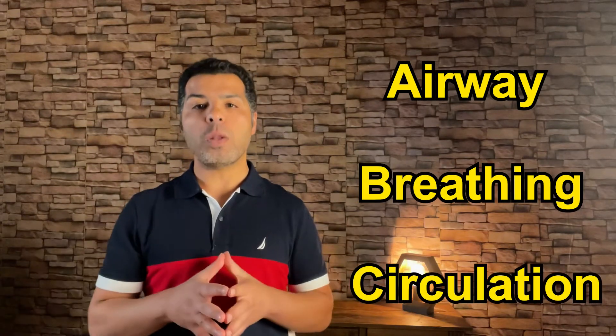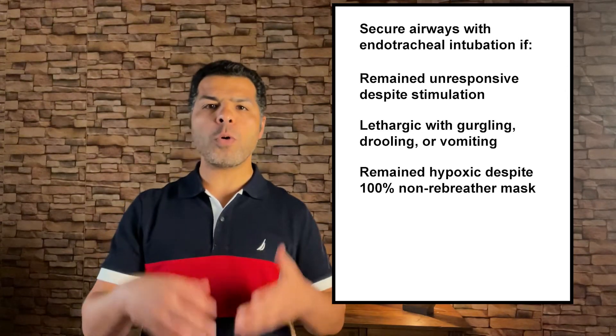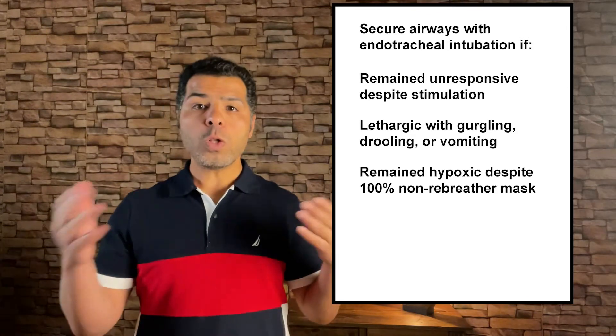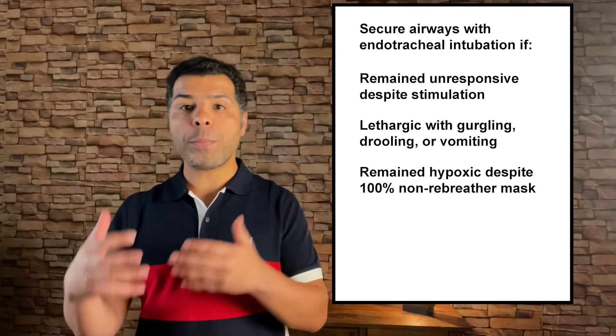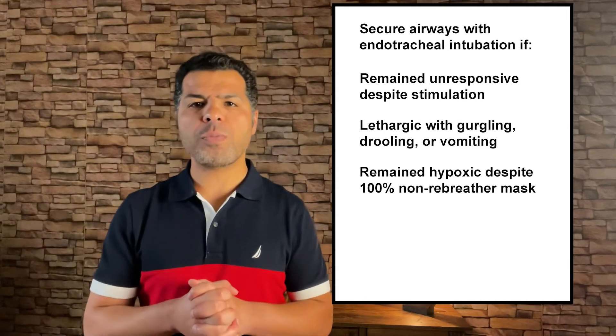At this point, the goal is to stabilize the patient as much as we can so we can transfer them to the ICU. Remember the ABC: airway, breathing, circulation. Secure the airway with endotracheal intubation immediately if the patient remains unresponsive despite aggressive stimulation with a sternal rub or other strong painful stimuli, or if the patient is responsive but lethargic with drooling, gurgling, or vomiting. Also proceed with endotracheal intubation if the patient is very hypoxic despite a 100% non-rebreather mask — given how unstable the patient is, there may not be enough time to try non-invasive positive pressure ventilation. Proceed with intubation only if the patient is full code and does not have a do-not-intubate status.